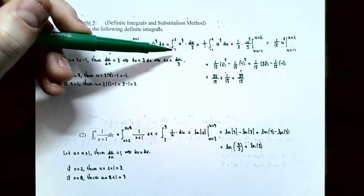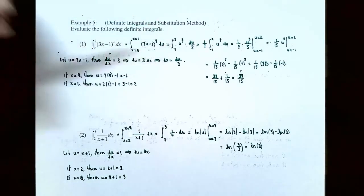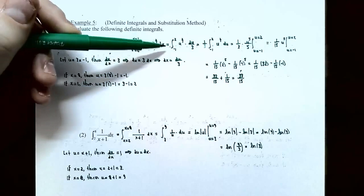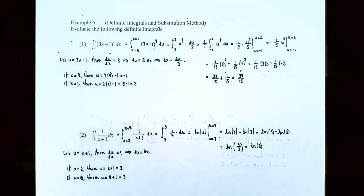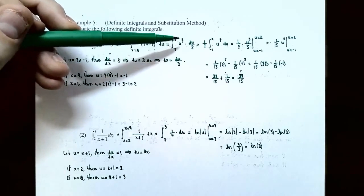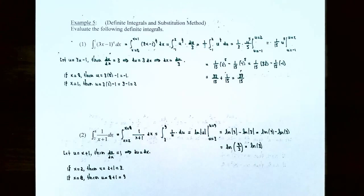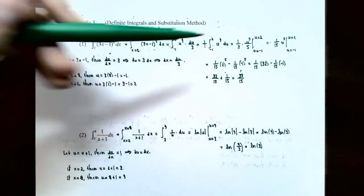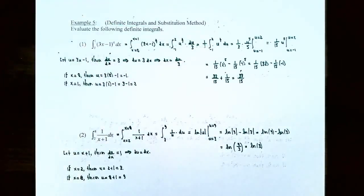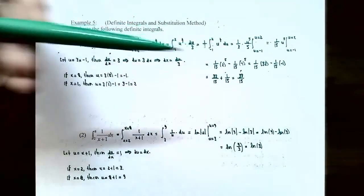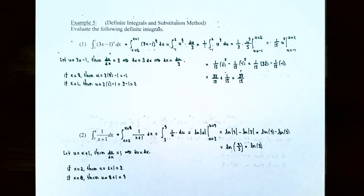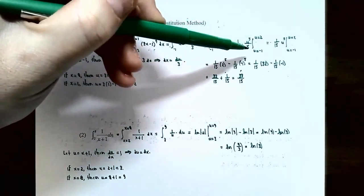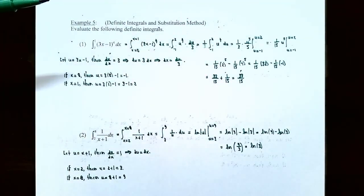The lower limit is u equals negative 1, the upper limit is u equals 2. We change 3x minus 1 to u to the fourth power, and replace dx with du divided by 3. So we have the integral from negative 1 to 2 of u to the fourth times du divided by 3. The 3 in the denominator is a coefficient of one-third factored out, giving one-third times the integral from negative 1 to 2 of u to the fourth du. Using the power rule: add 1 to the exponent and divide by the new exponent, giving the antiderivative u to the fifth over 5. Then apply the fundamental theorem of calculus, evaluating at u equals 2 and u equals negative 1.